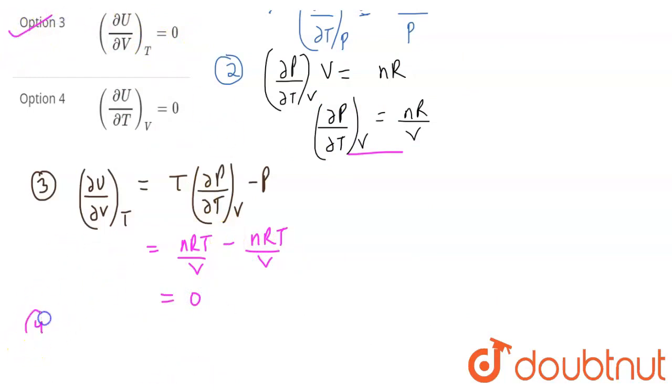But if I talk about the fourth value, so what do you think about del U by del T at constant V? So this will be 0, so this will not be possible. Because this will tell you about the above that if our del U by del V at constant T is equal to 0, so this will be equal to del U by del T at constant V equals 0. So this will be wrong. So option three will be correct. Thank you.